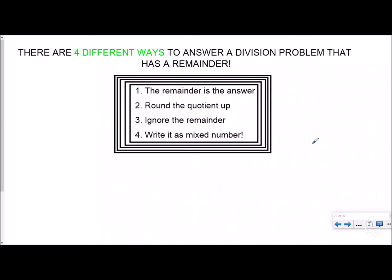Go ahead and write these down in your notes, and then we'll talk about them as we go through the lesson. First, the remainder could be the answer. Second, you might be able to round the quotient up one. Third, you could ignore the remainder and the answer is just your quotient. Or fourth, you could write your answer as a mixed number.